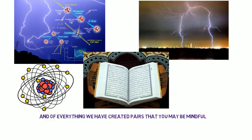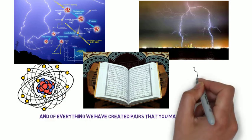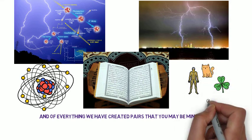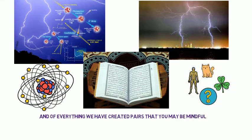In another verse, Allah Almighty refers to the creation of humans, animals, plants, and other things that we do not know, in pairs.